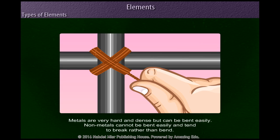Metals are very hard and dense and can be bent easily. Non-metals cannot be bent easily and tend to break rather than bend.